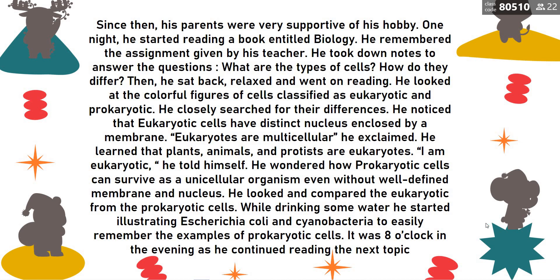He took down notes to answer the questions: What are the types of cells? How do they differ? He sat back, relaxed, and went on reading. He looked at the color figures of cells classified as eukaryotic and prokaryotic, closely searching for their differences. He noticed that eukaryotic cells have a distinct nucleus enclosed by a membrane, and that eukaryotes are multicellular. He learned that plants, animals, and protists are eukaryotes. He wondered how prokaryotic cells can survive as unicellular organisms even without a well-defined membrane or nucleus, and started illustrating Escherichia coli and cyanobacteria as examples of prokaryotic cells.